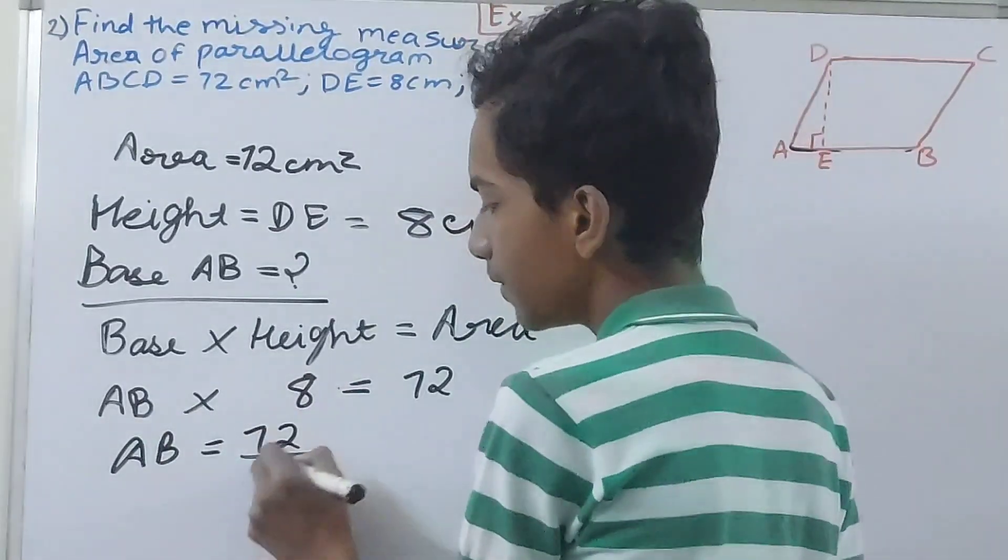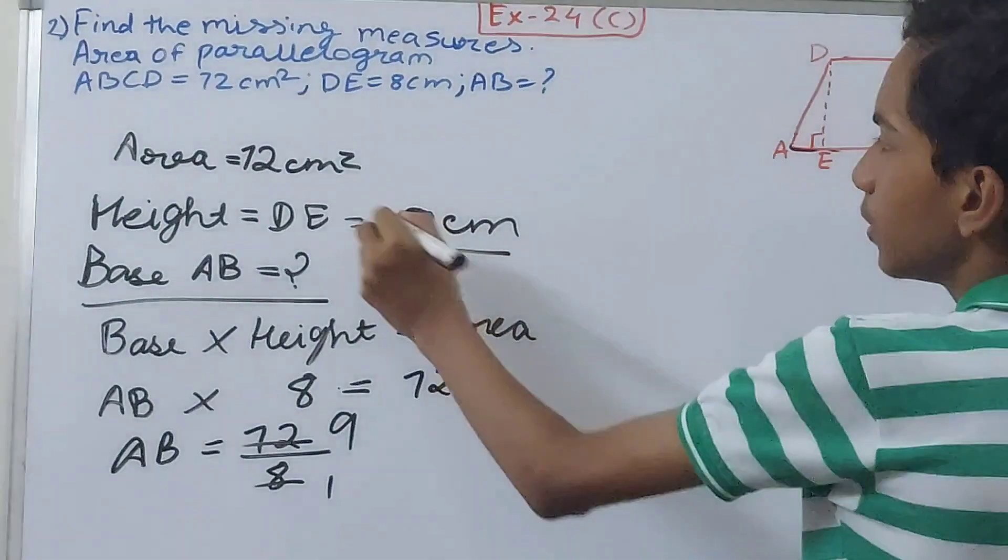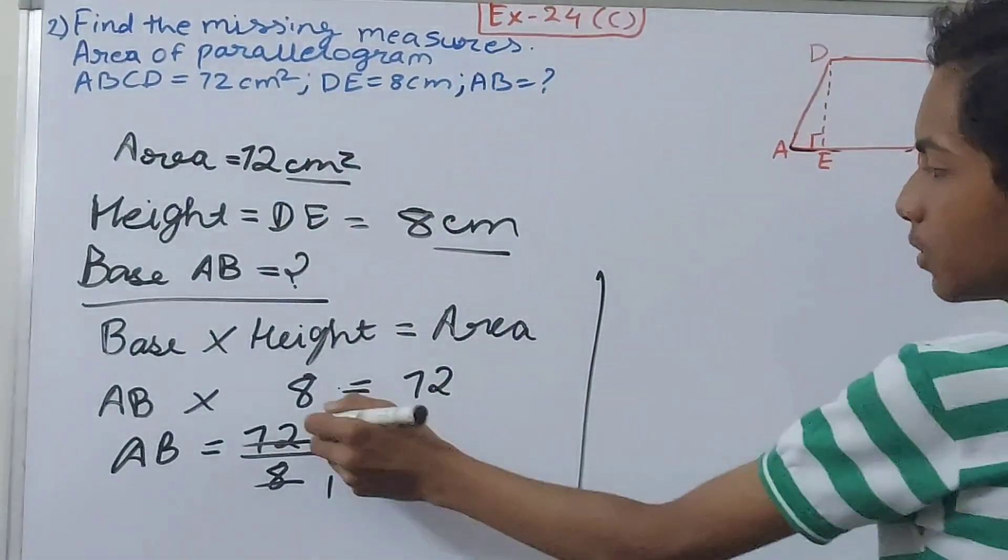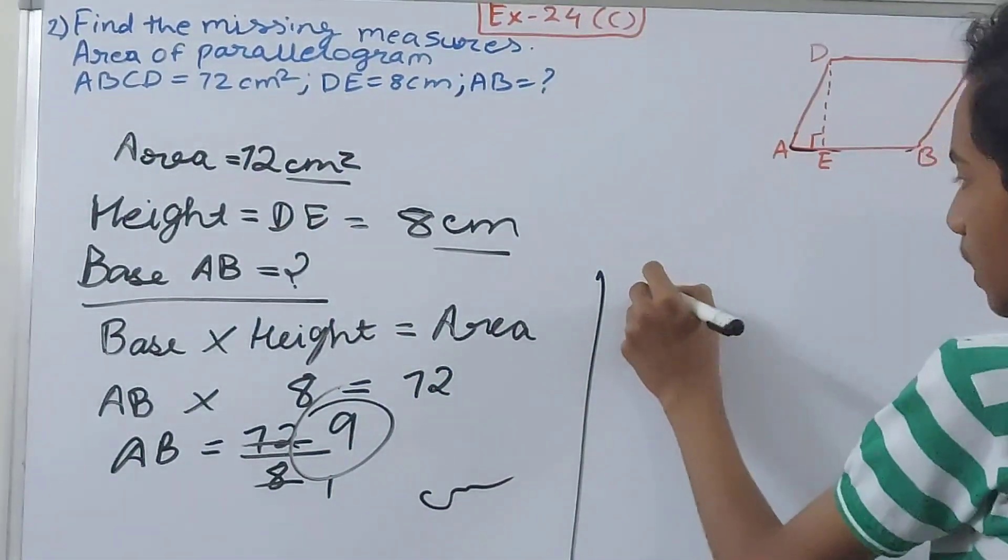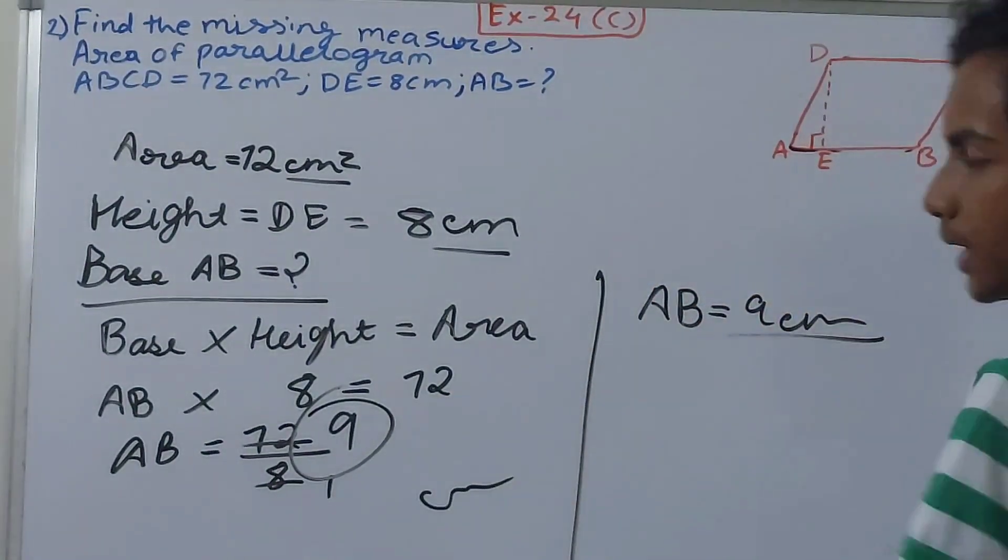Now AB equals to 72 upon 8, so divide 72 by 8, so one and nine. And since both the units were in centimeters, so this also will be in centimeters only. So AB equals to 9 centimeters, this becomes our answer.